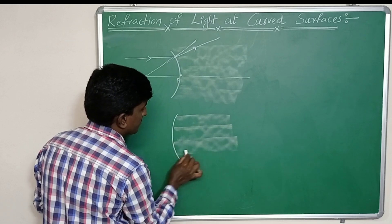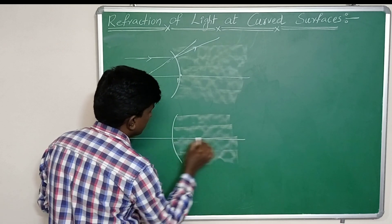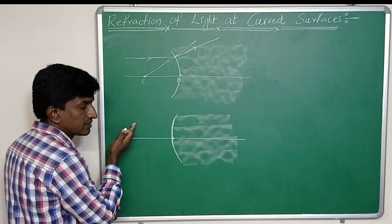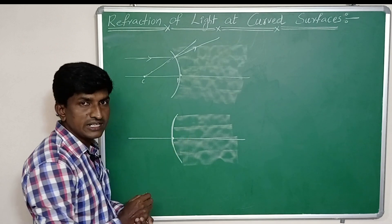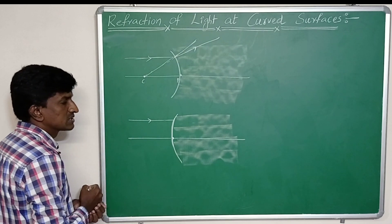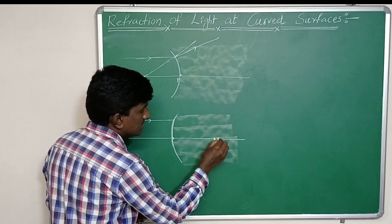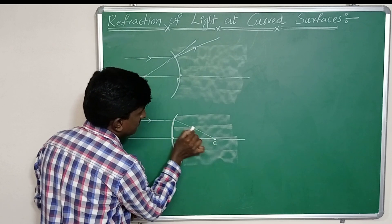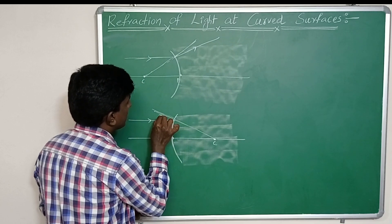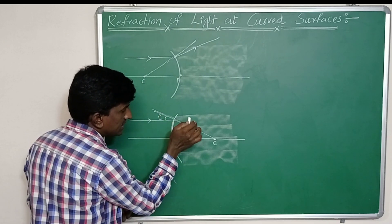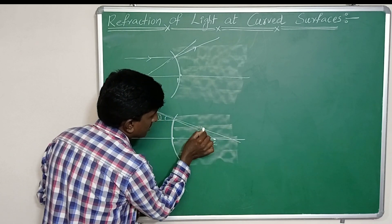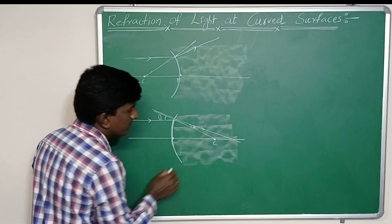Now consider a convex surface with air as the rarer medium and glass as the denser medium. A parallel light ray incidents on the convex surface. Using the radius of curvature as the normal line, we see that since the light is entering into denser media, the light ray bends towards the normal line, forming the angle of refraction.